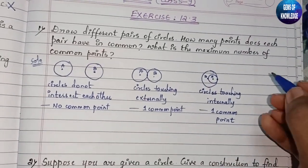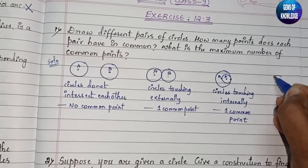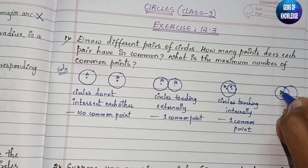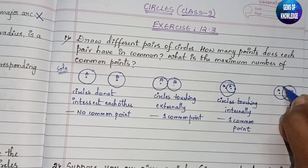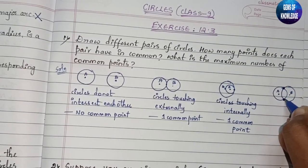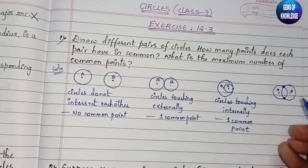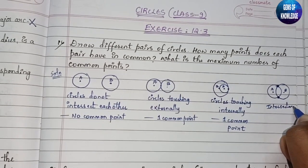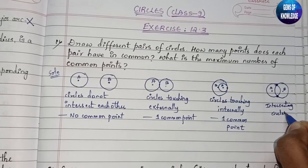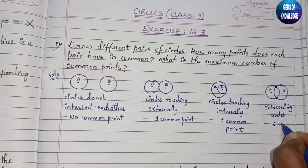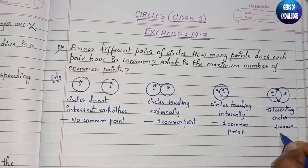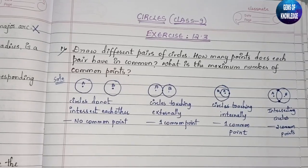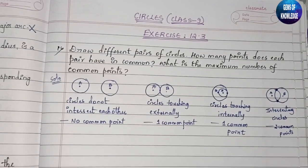Finally, we have two circles intersecting each other. This is circle A and this is circle B. These are intersecting circles, and they have two common points — this point and this point. So intersecting circles have two common points.